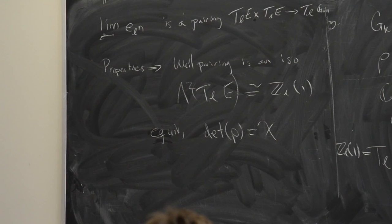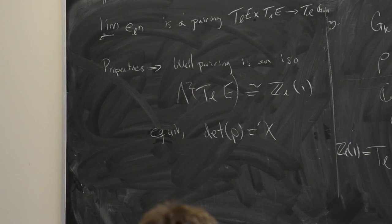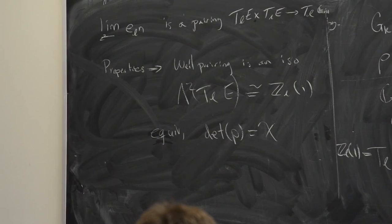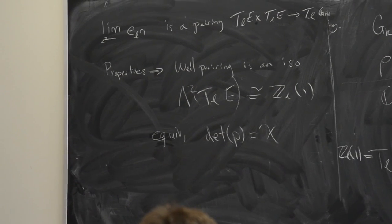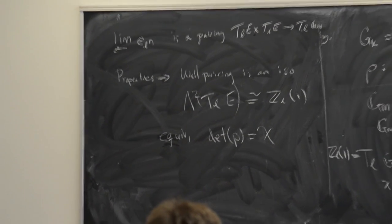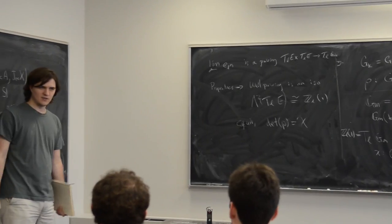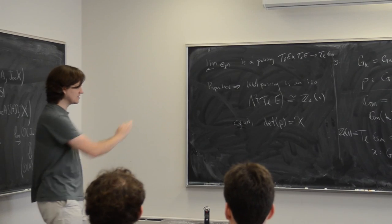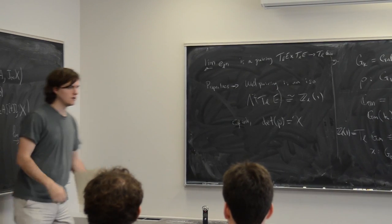When I first learned about the Weil pairing, it was hard to put into context — but a good way to remember what it really means is that it's computing the determinant of the Tate module representation.